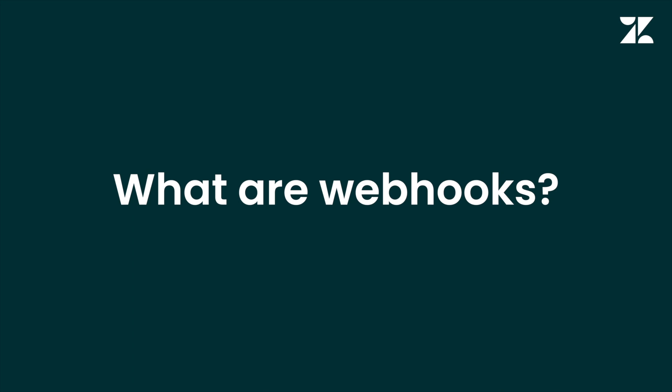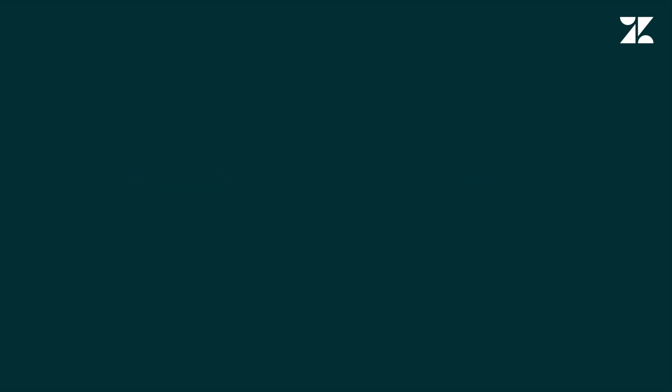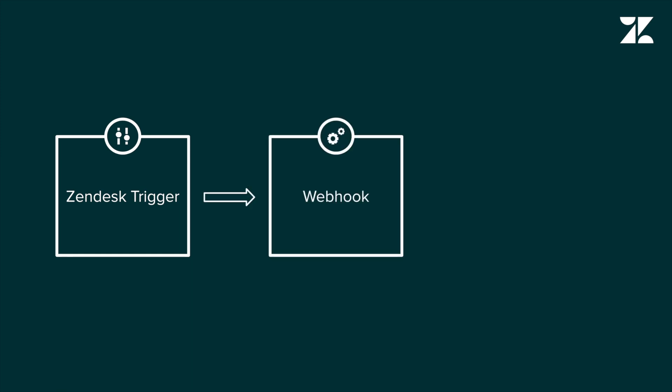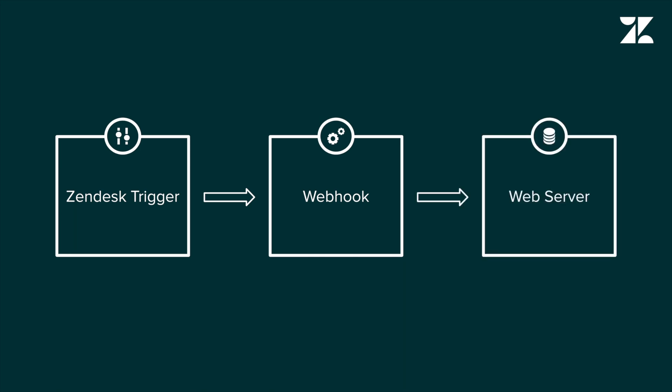Say for example, you have a workflow in Zendesk where any time a new ticket is submitted, you'd like to record the email address of the requester in an external database. You can set up a trigger which fires an action to notify the webhook when a new ticket is received. You then provide the email address to the webhook, and that will be sent as a POST request to the external database.